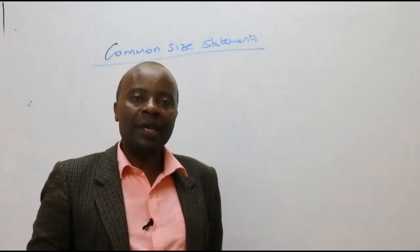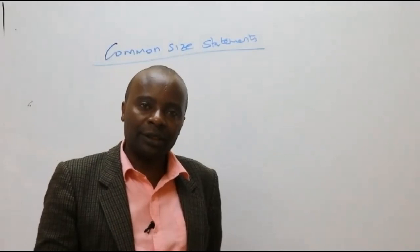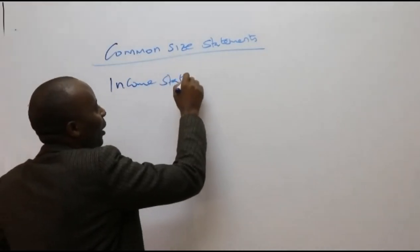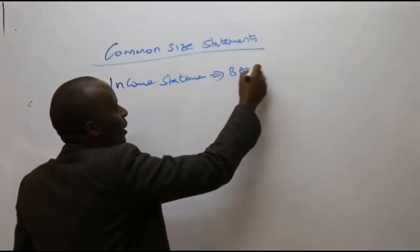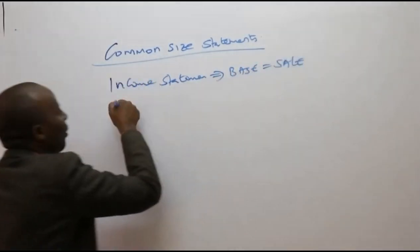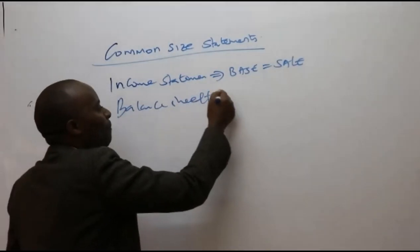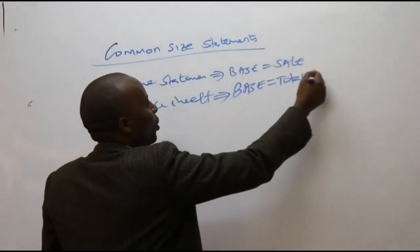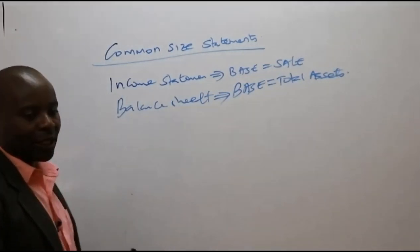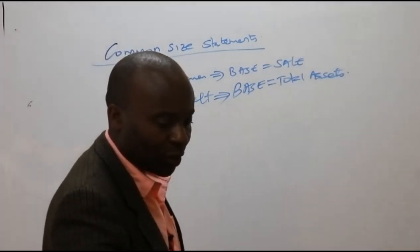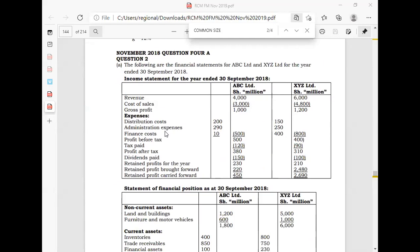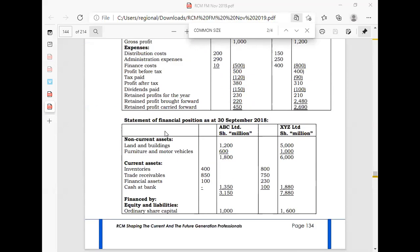For the income statement, the base value is always sales. So for a common size income statement, the common base is sales. For our balance sheet — our statement of financial position — the base will be equal to total assets. I want you to appreciate how this concept is done in practice.